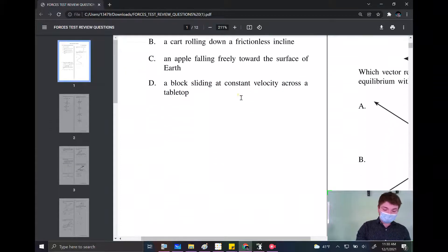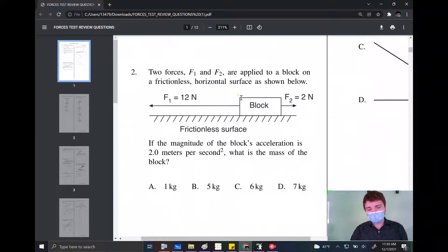Okay, let's take a look at the second one now. We have two forces, F1 and F2, being applied to a block on a frictionless horizontal surface as shown below. If the magnitude of the block's acceleration is 2.0 meters per second squared, what is the mass of the block?